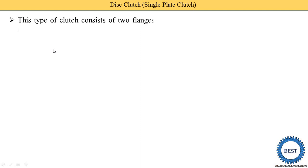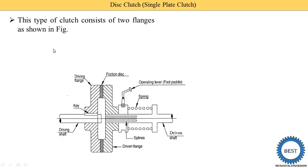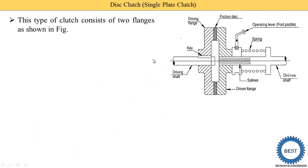This type of clutch consists of two flanges as shown in the figure. Here you see, this is the diagram of disc clutch. This is the driving shaft. On the driving shaft, the driving flange is installed. This is the driving flange. This part is called the driving flange. This is the driven shaft.